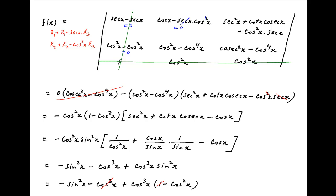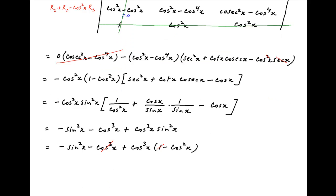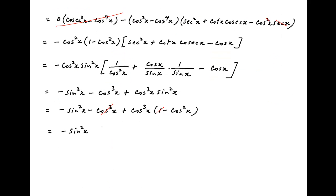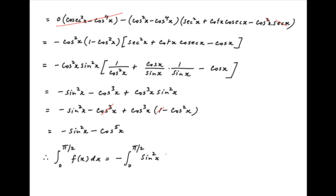The cos³(x) terms cancel, and therefore f(x) simplifies to minus sin²(x) minus cos⁵(x). Therefore, the integral of f(x) between the limits 0 and π/2 equals minus the integral from 0 to π/2 of sin²(x) dx minus the integral from 0 to π/2 of cos⁵(x) dx.